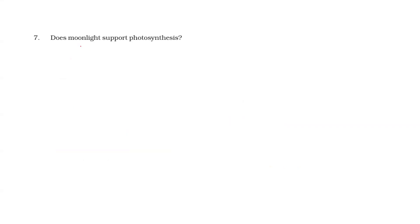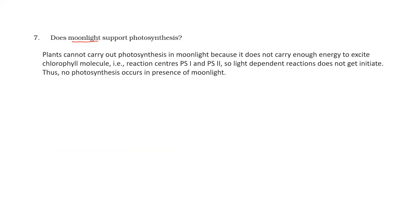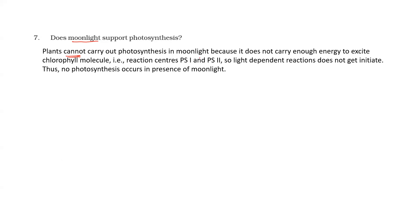Seventh question: does moonlight support photosynthesis? Plants cannot carry out photosynthesis in moonlight because the energy present is not sufficient to excite the chlorophyll molecule — that wavelength does not have enough energy to excite electrons from PS2 to the electron acceptor. So the light-dependent reaction cannot start, and photosynthesis cannot occur in the presence of moonlight.